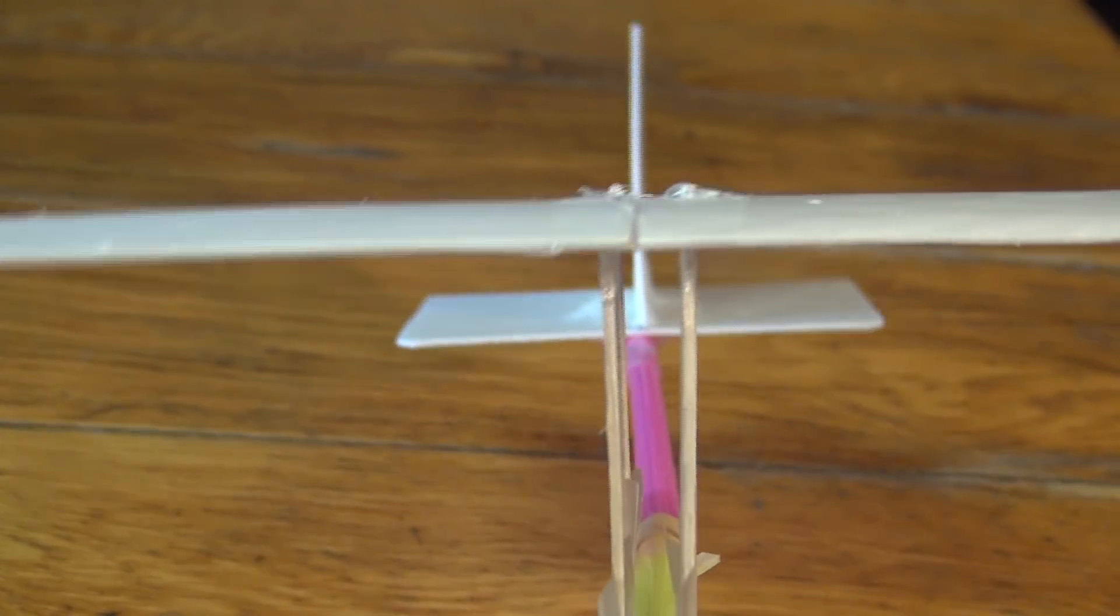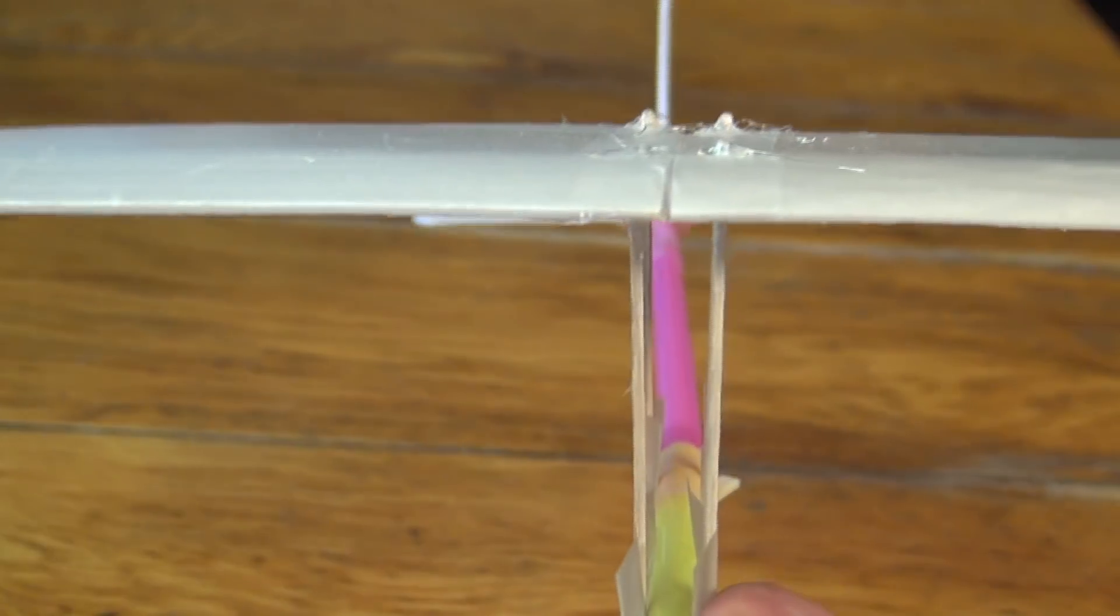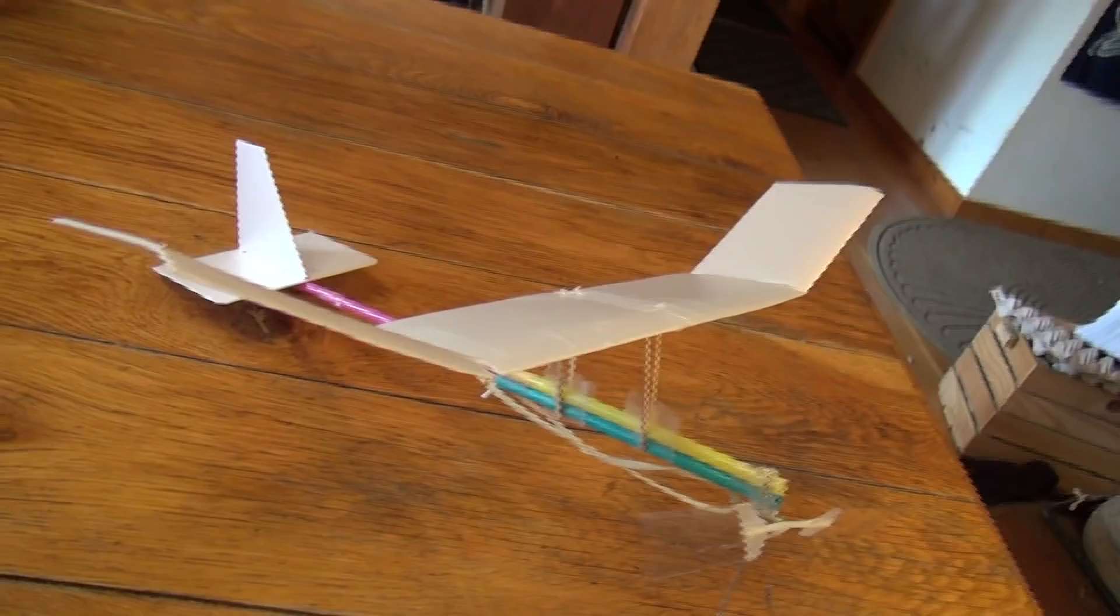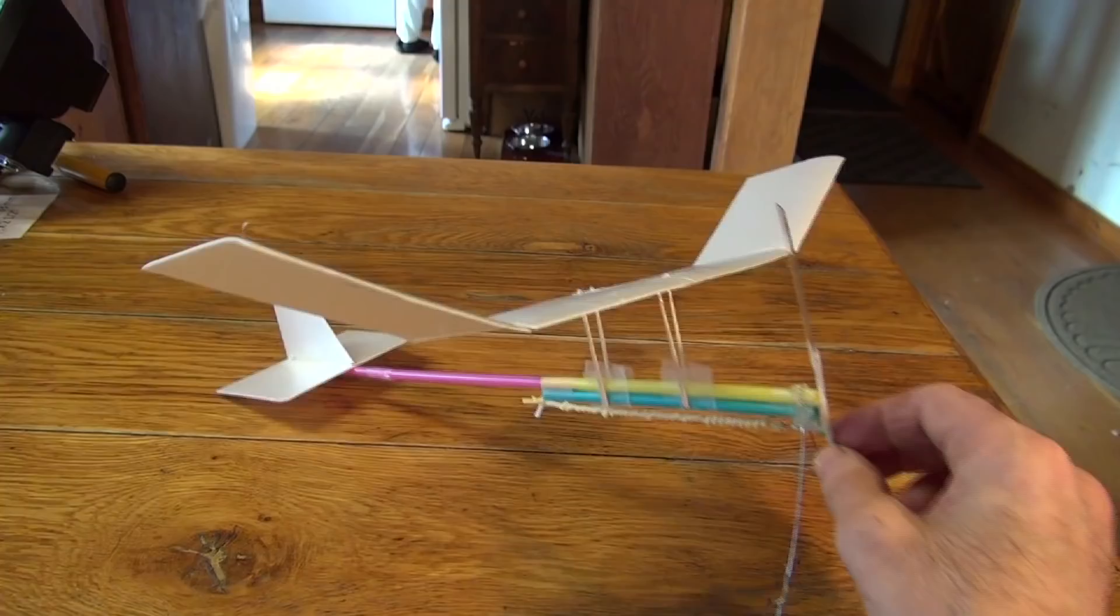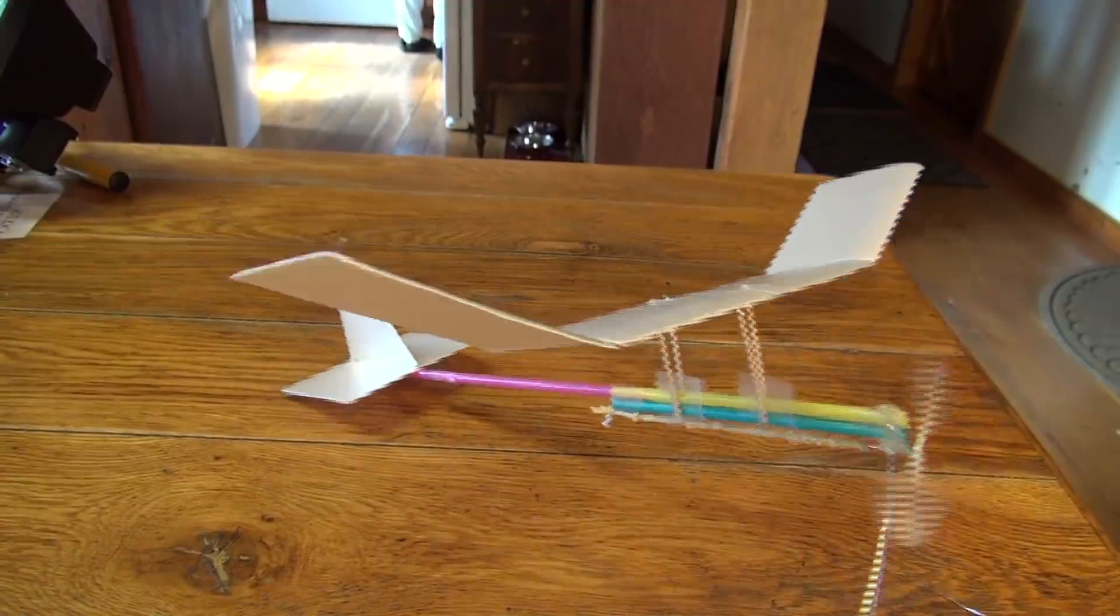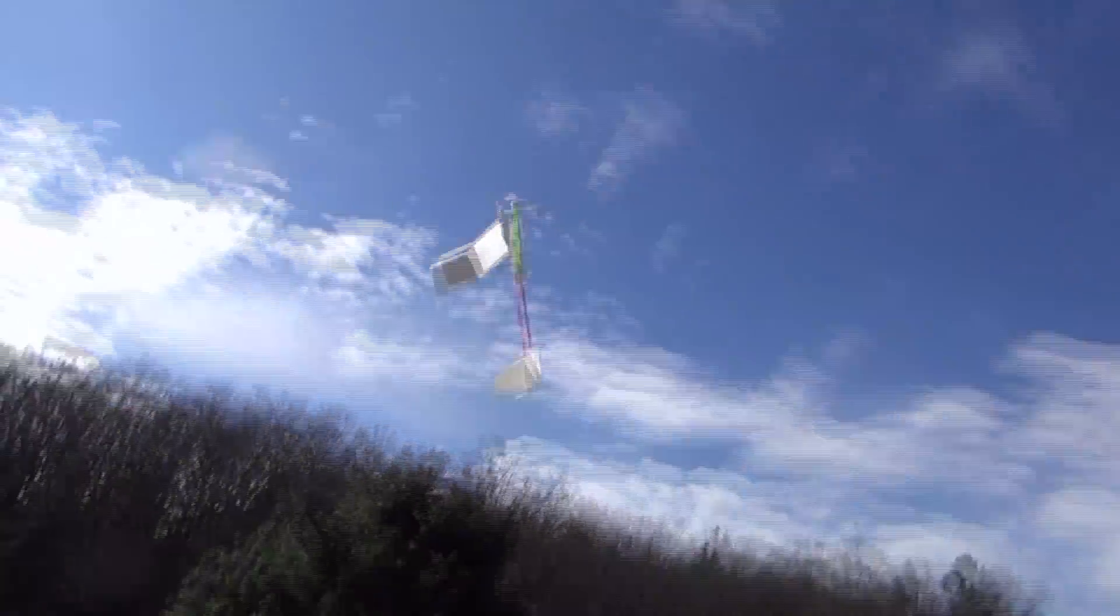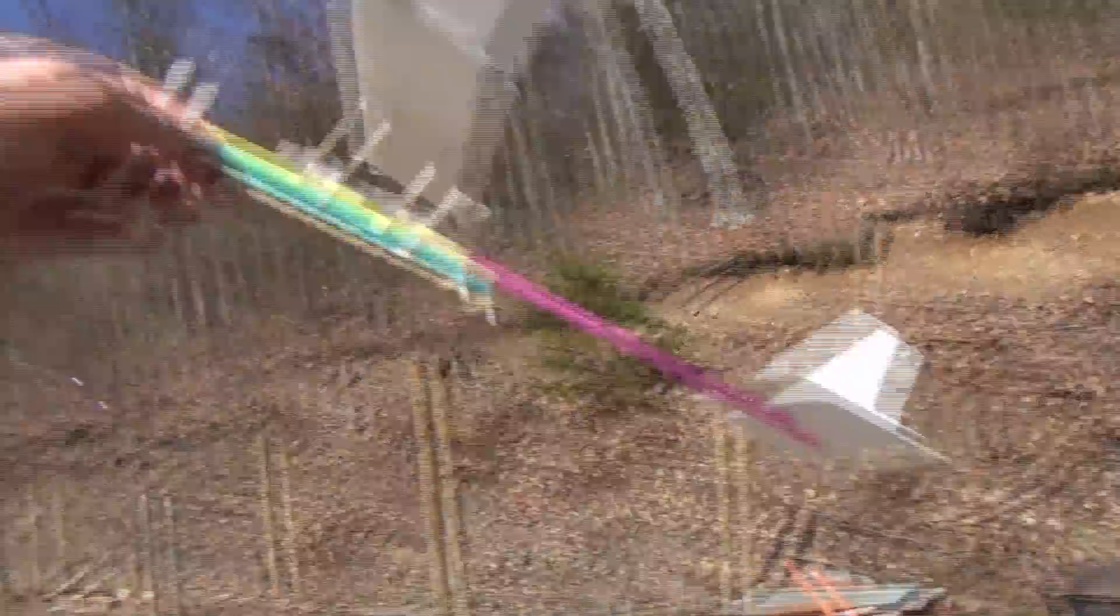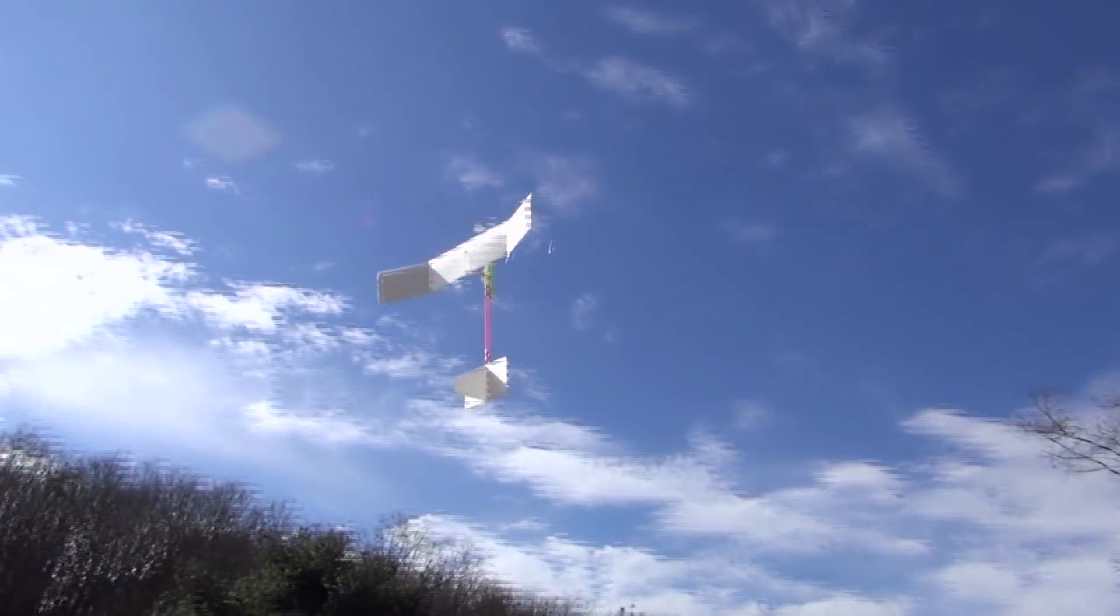The tail should be straight and lined up with the wing, at least at first. I think we're ready to fly. Make sure you wind it up enough. The first time I flew this plane, it stalled. Sometimes people confuse stalling with diving, which comes after a stall. But if it stalls first, it's a stall.